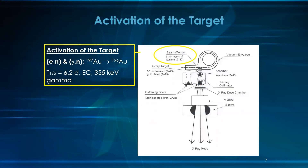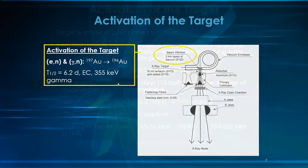Now we are talking about activation of the target — the components at the target level. Electrons could produce neutrons, and gamma rays could produce neutrons as well. Gold-197 is converted to gold-196, emitting 355 keV gamma rays with a half-life of 6.2 days. This is important when biomedical engineers are working at the target level, as they may be exposed to this energy.